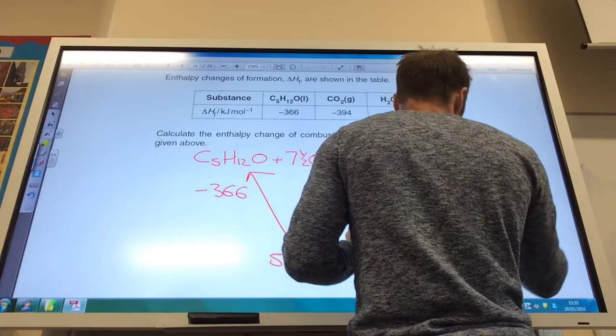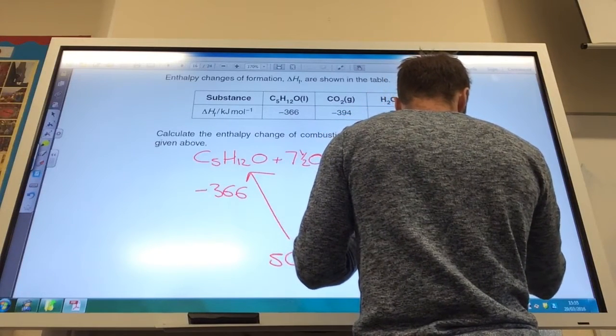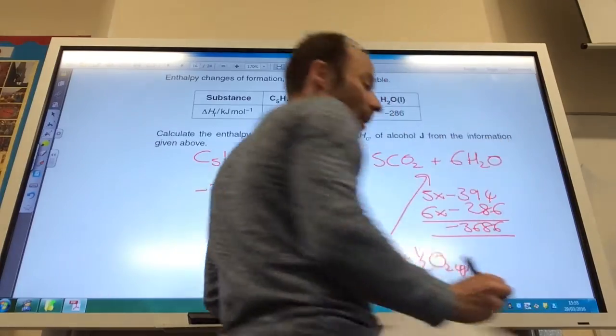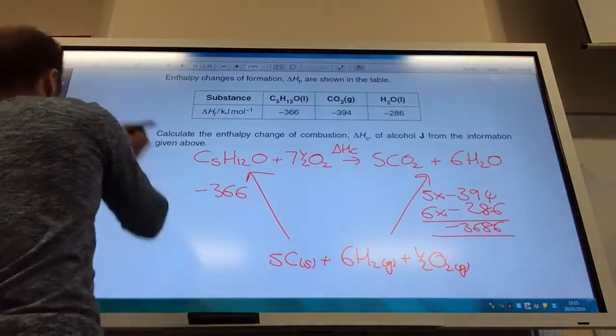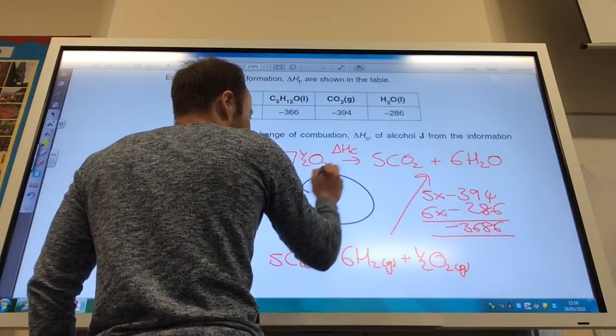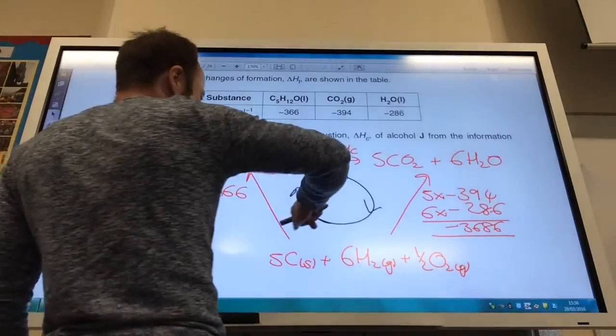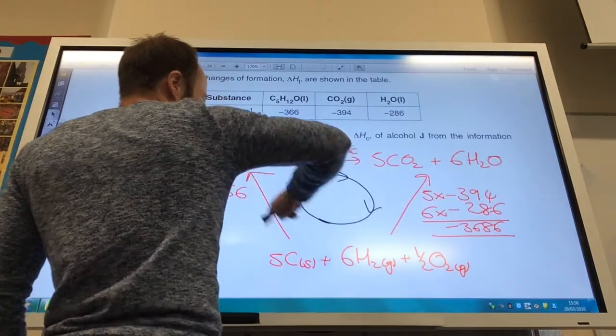If I add all those together, it comes to minus 3686. Okay, now, different people do this different ways. The way I do it is I draw a circle, and I put clockwise arrows going around the circle. Hopefully, you can see that this arrow and this arrow go clockwise.